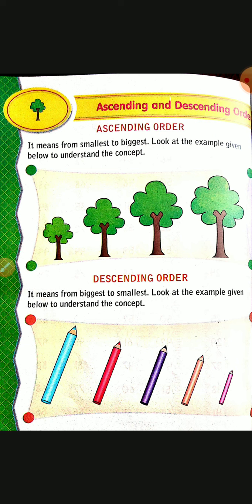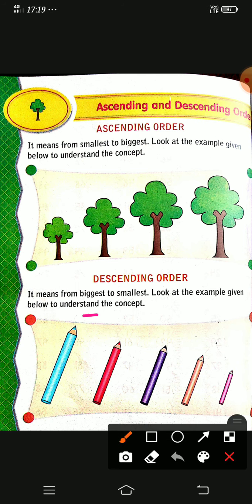Next, descending order. Here, for example, they have given pencils from bigger size to smaller size. It means from biggest to smallest is called descending order. For example: 5, 4, 3, 2, 1 — we arrange from biggest to smallest. That is descending order.